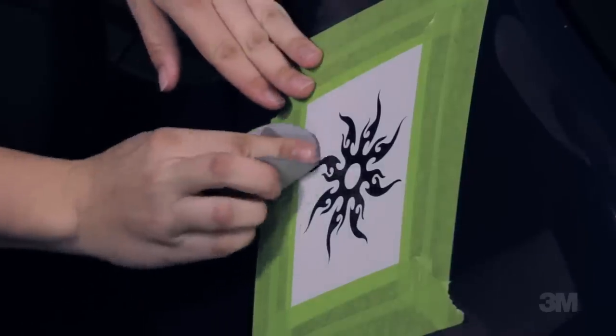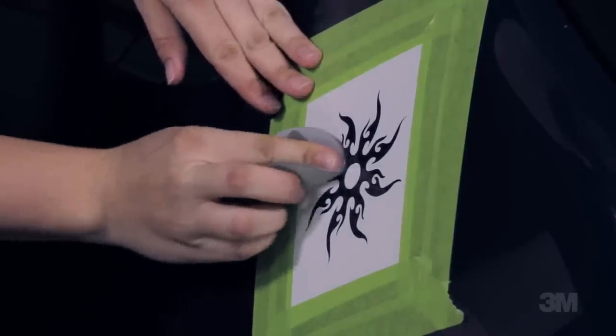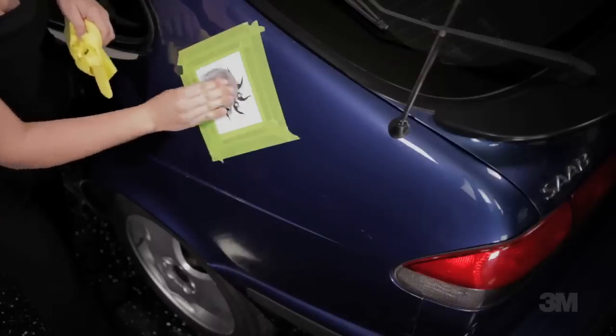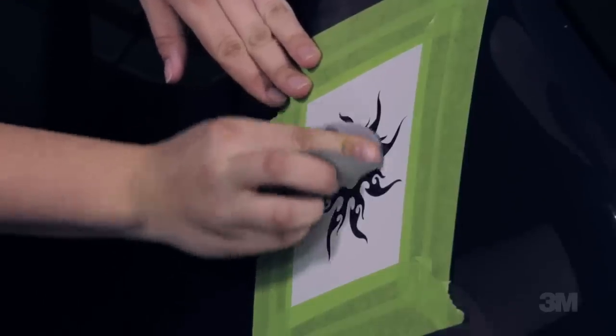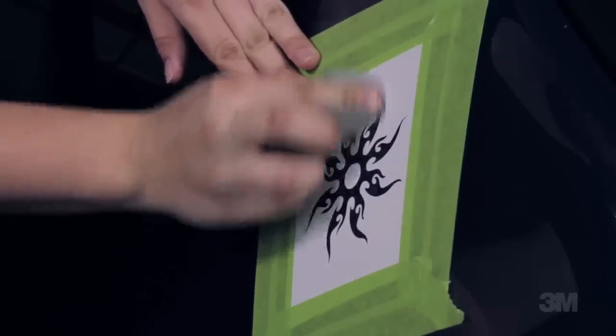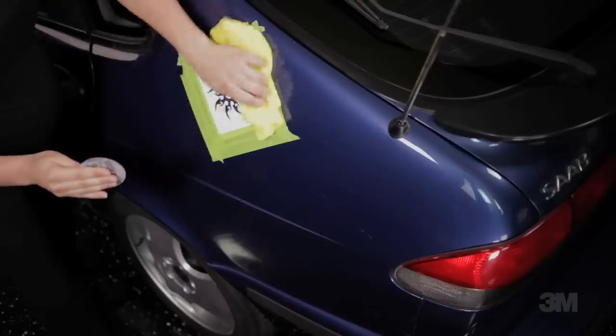Use the 3-inch gray sanding disc to make 5 passes over the image. Wipe the area with the microfiber cloth. If you see any shiny spots, make 5 more passes. Stop when the image appears evenly sanded.